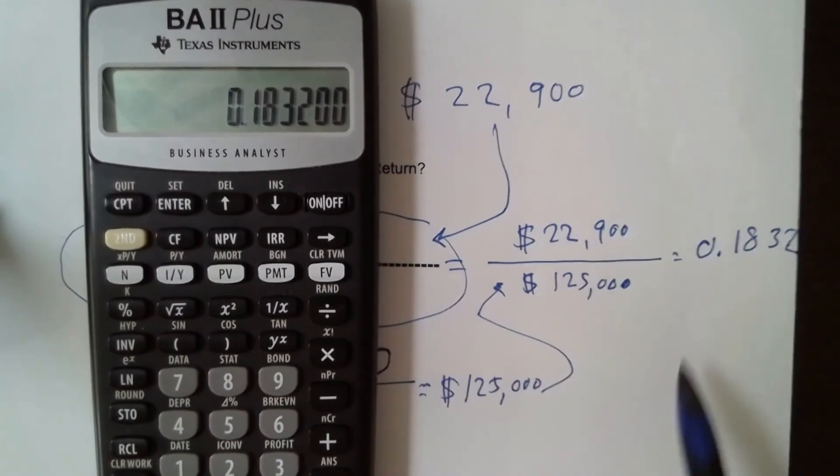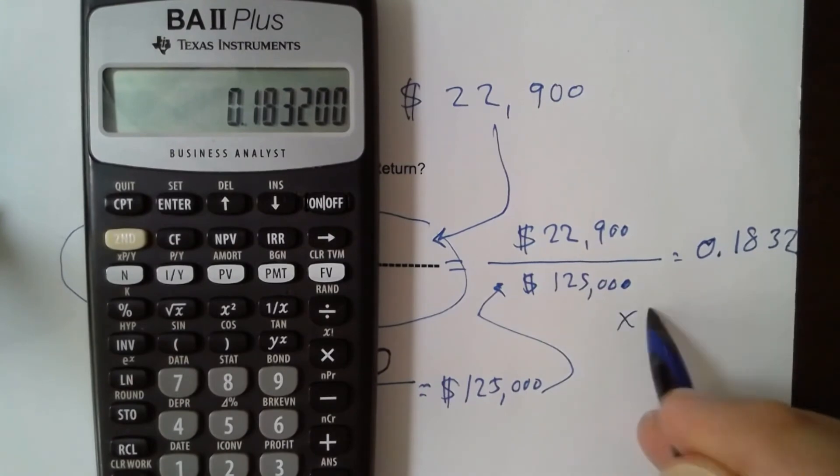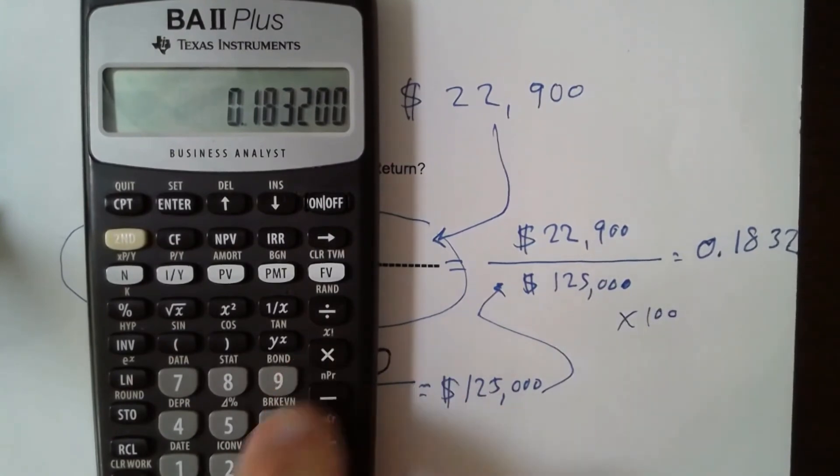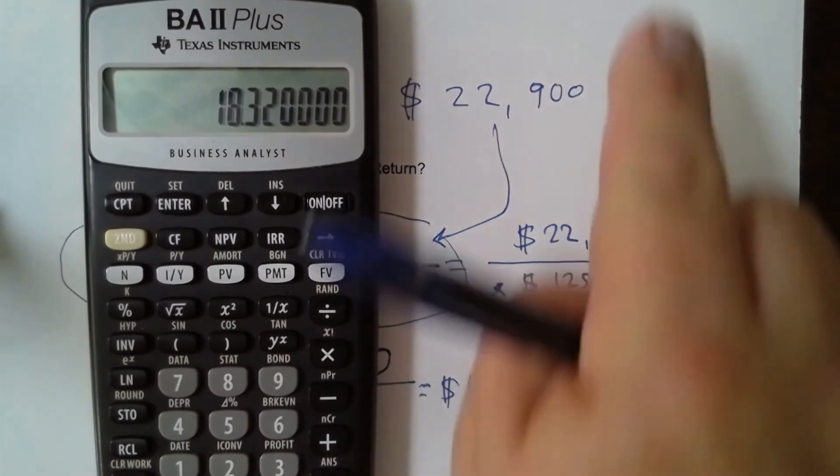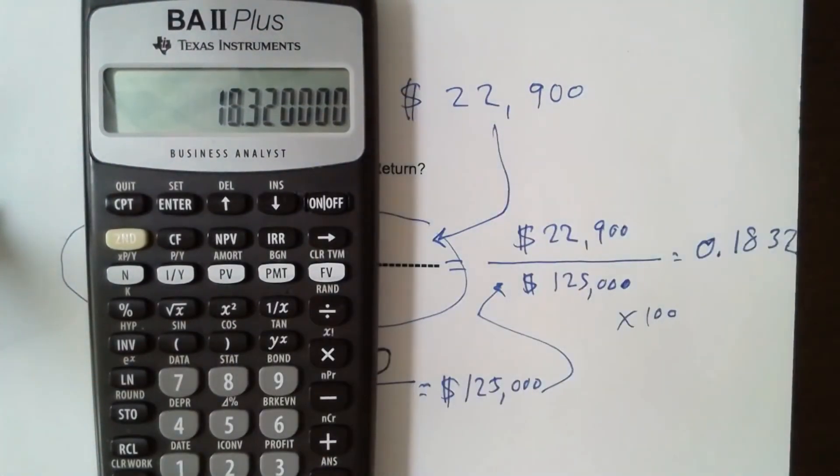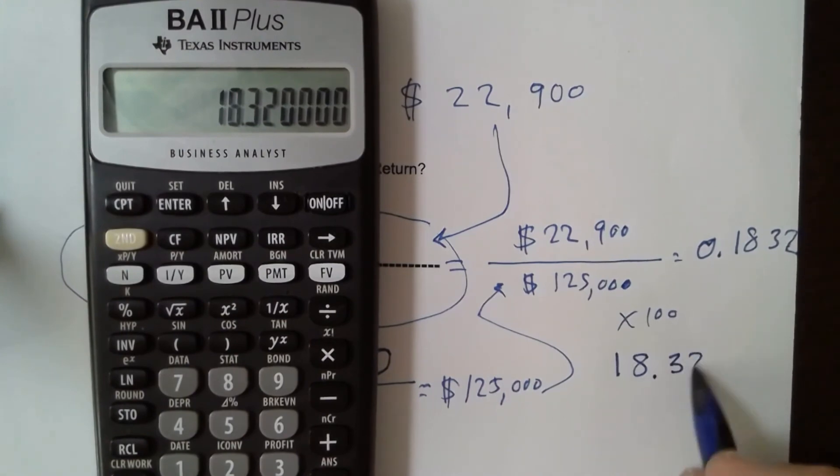And there are zeros after that, so we don't have to worry about that. And of course, usually we're going to state this as a percentage. This is in decimal form, so we're going to multiply it by 100 or move the decimal place over two places. If you've forgotten how to change decimals to percents or percents to decimals, I've got a video up here. Just click on that link and that will give you a refresher. And we're multiplying it by 100, so our average accounting rate of return is 18.32%.